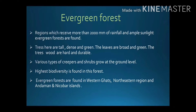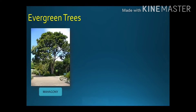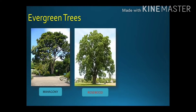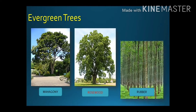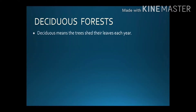Trees found in evergreen forest include mahogany, rosewood, and rubber — the same trees we have seen in the equatorial forest in Brazil.